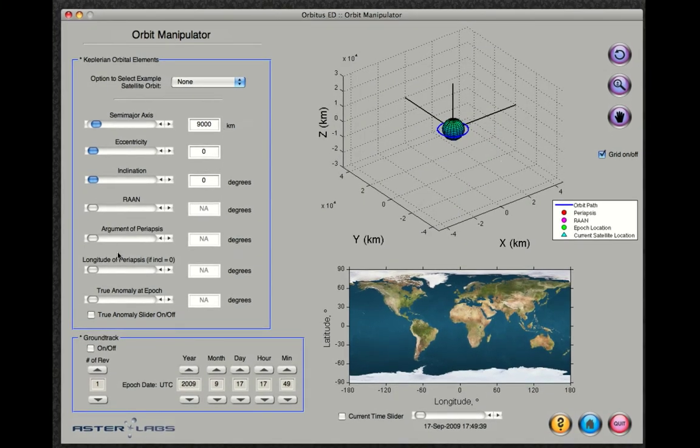You'll notice these slide bars on the left—they control the orbital elements. These orbital elements define a satellite orbit's geometry and orientation in 3D space.